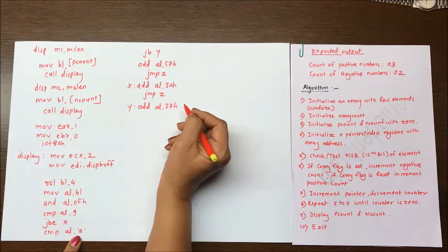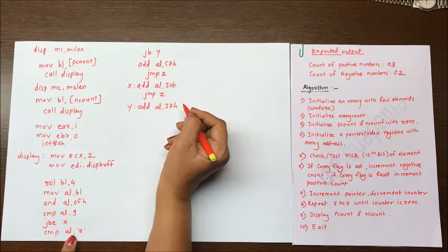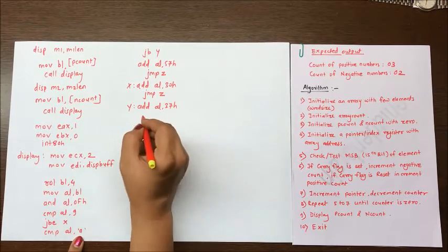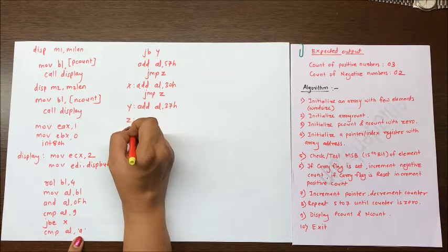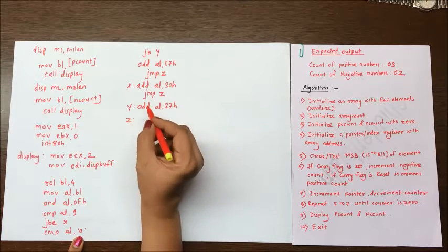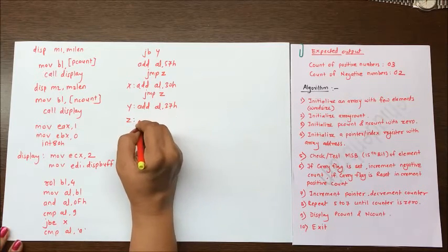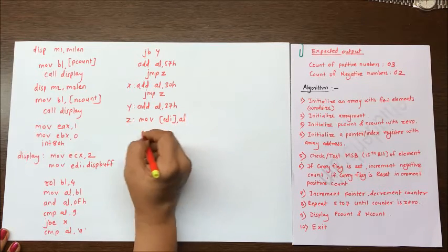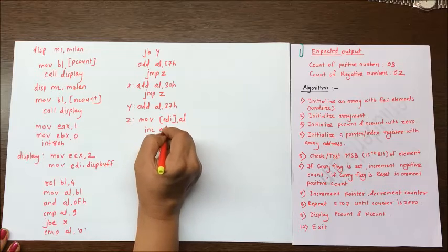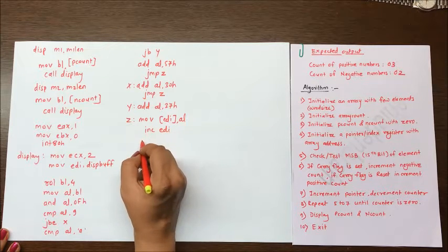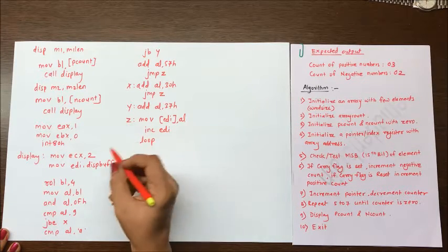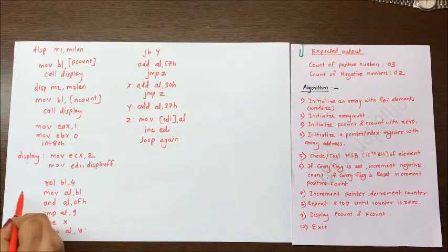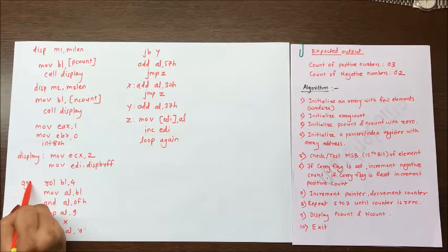This is in case your number is less than a, that is below a, which is between capital A to capital F. And here we can write z. So three add instructions are considered. What will be z? Move current al in edi. So save it in a buffer. Increment that buffer, increment the index. And use the loop instruction again. Because we are using ECX, so we can say again. And where is the again return? It is to rotate instruction.